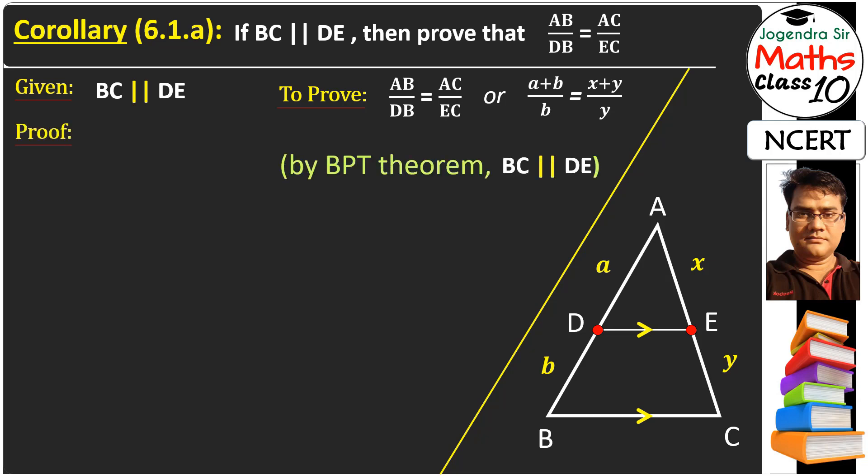By BPT Theorem, because BC parallel DE, we can say that A upon B is equal to X upon Y. We can say that A plus B means full AB length, and X plus Y means full AC length.